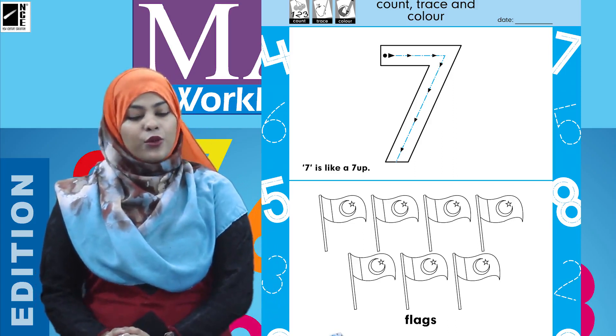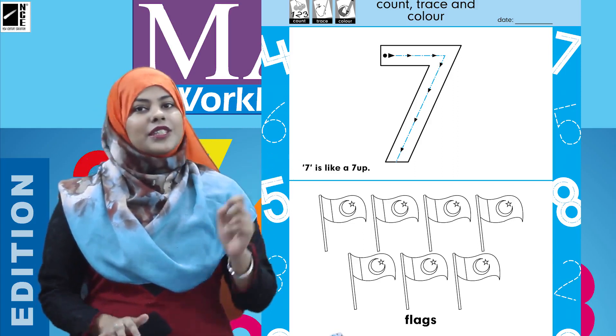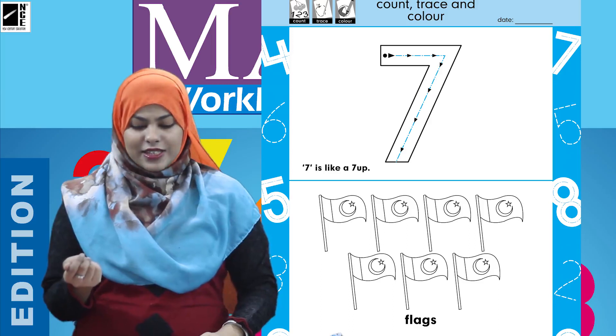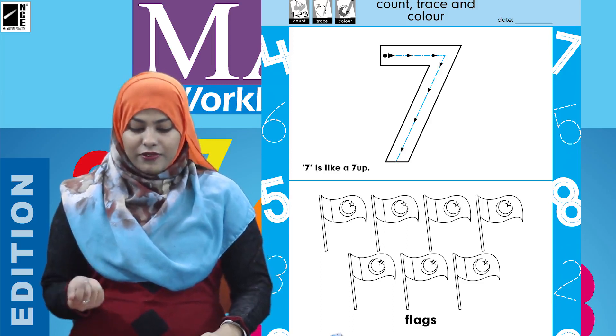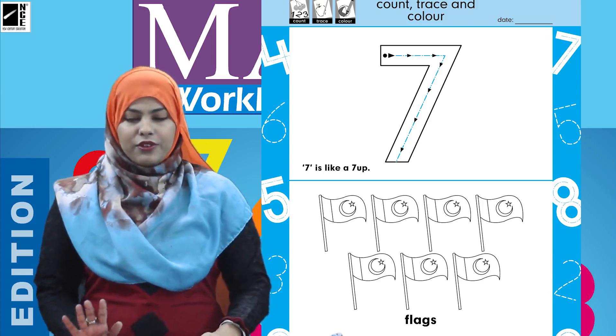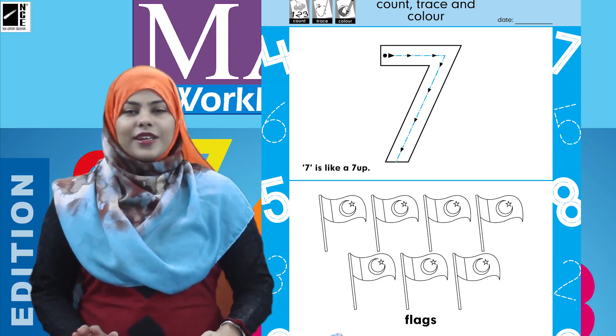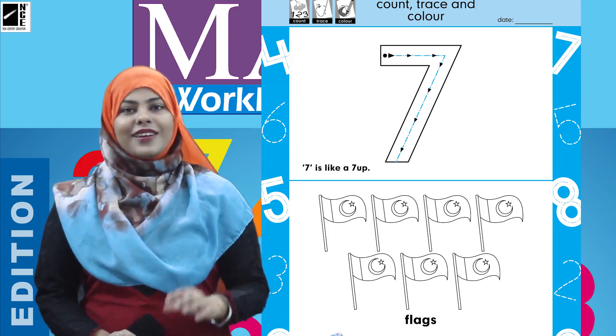And now hamne aache se seven se friendship bhi ho gai hai. To ab hum kya karenge, the flags bane hua hai na hamne. Isme hum aache se colors kar denge, thik hai. To ye to humari flag bana hua hai. To aapko pata na aache se colors, aapne ispe green and white, thik hai, green color kar lenge aap ispe. So this work is done over here. See you in the next class. Till then take care, Allah hafiz.